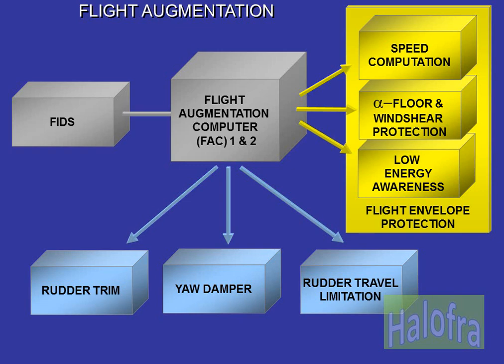The flight augmentation part provides the following functions: rudder trim, yaw damper, rudder travel limitation, flight envelope protection, and fault isolation and detection system. For flight envelope protection, the FAC computes the various speeds for aircraft operation, e.g. flaps limit speed; excessive angle of attack and wind shear detection; and the low energy warning, indicating to the crew that the aircraft is quickly decelerating and that thrust will have to be increased to recover a positive flight path angle through pitch control. For the FIDS, only FAC-1 is connected and communicates to the CFDS for all other AFS computers.